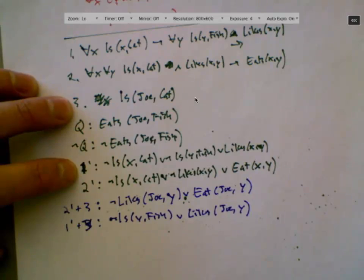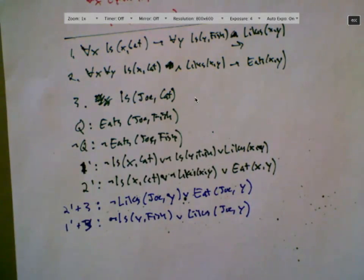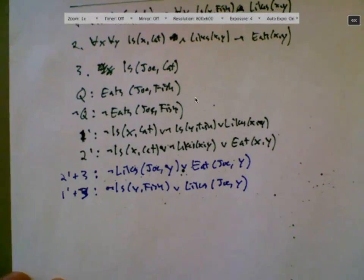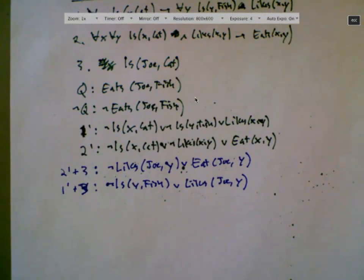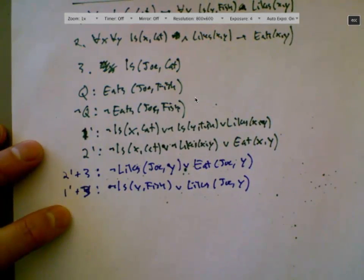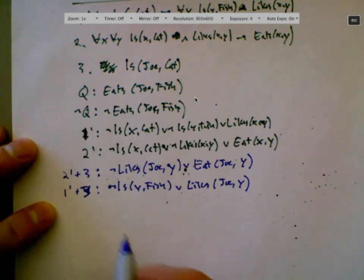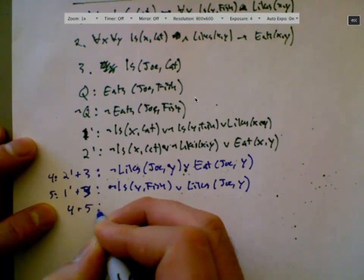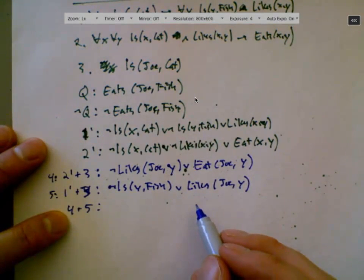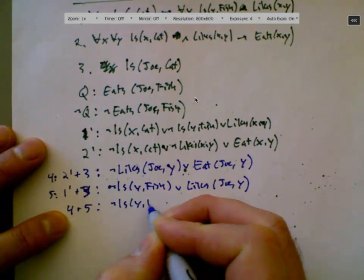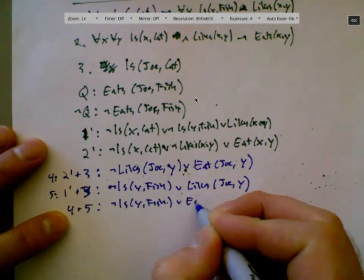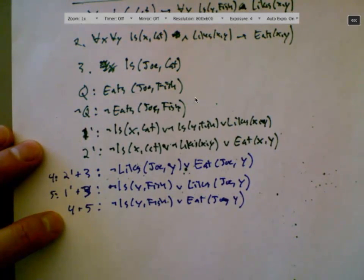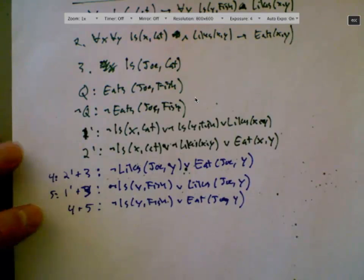Okay. Now when you're in a situation or an exam or something, don't freak out. Okay, we're making progress here. We're deriving some new consequence of things we know. It's all good. We can resolve two prime plus three and one prime plus three. Oh, yeah. Let's give these numbers. Should we call this four and call this five? So now we're going to say resolving four and five, resolving on likes. Yeah. So now we have not is y fish or eat Joe y. Okay.